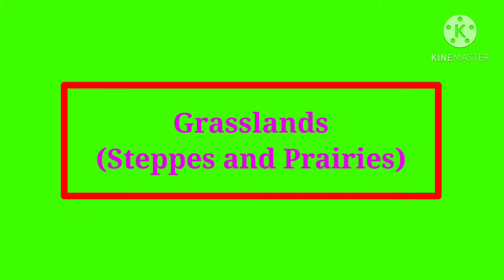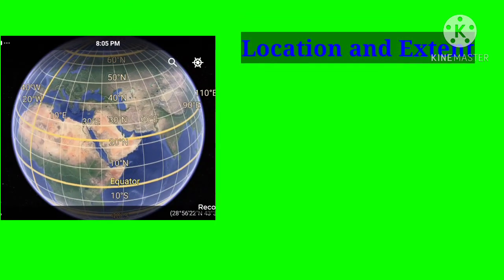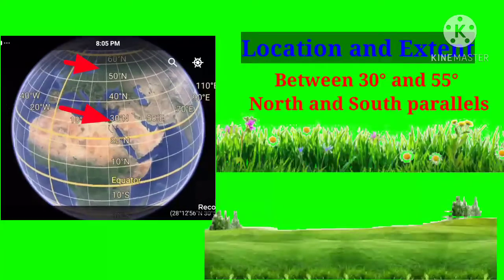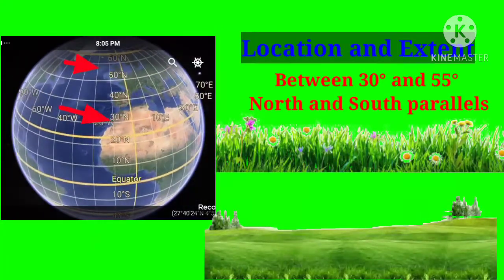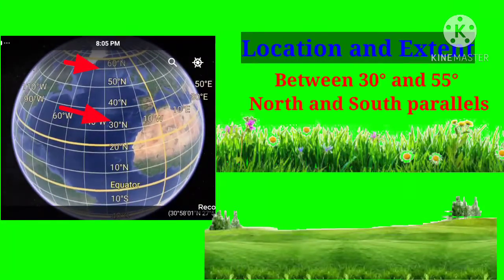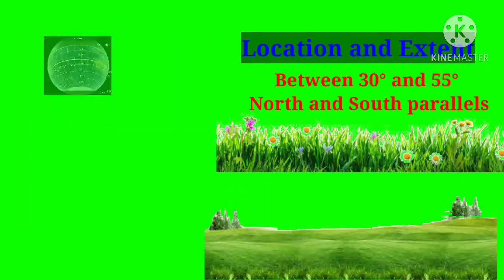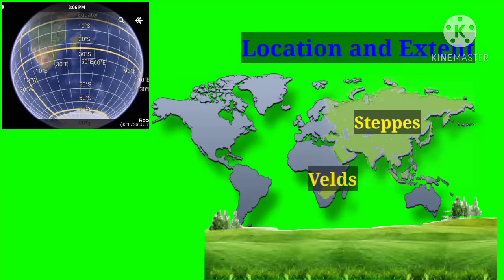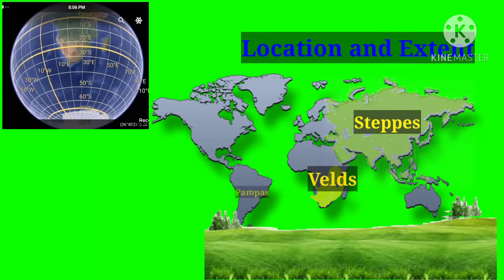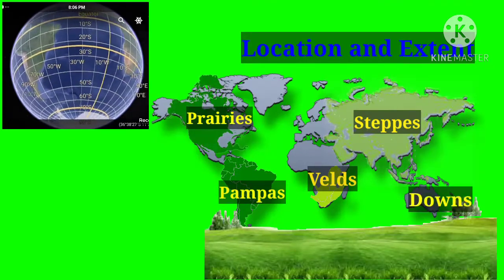Grasslands, steppes, and prairies — location and extent. Grasslands are located between 30 degrees and 55 degrees north and south parallels in the interior parts of the continents. These grasslands are named differently in various regions of the world: steppes in Eurasia, velds in South Africa, pampas in South America, prairies in North America, and downs in Australia.